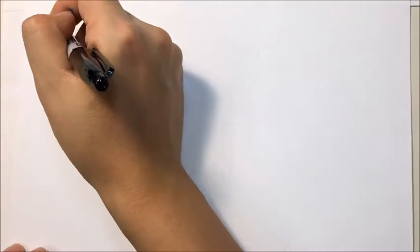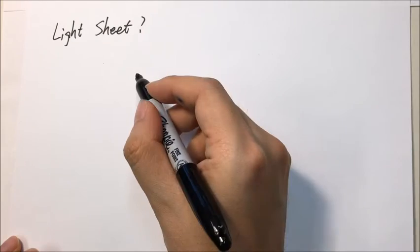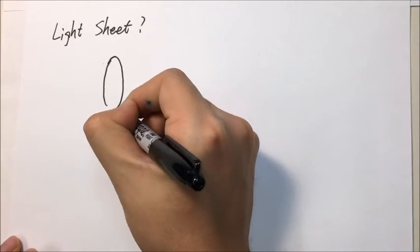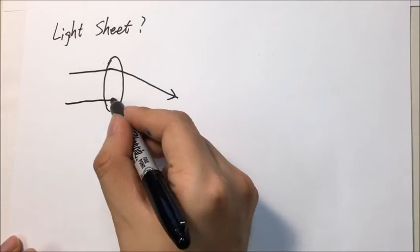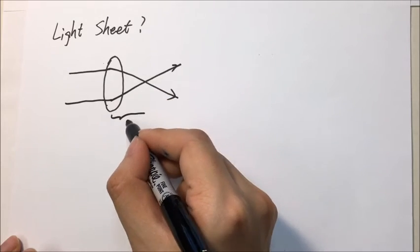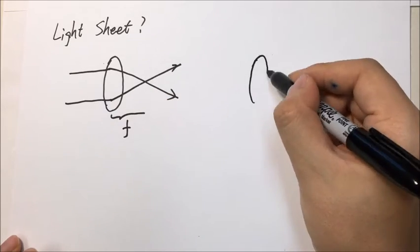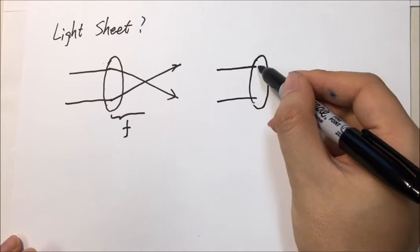What is light sheet? First, let's consider the simplest example: lens focus. A parallel light hits a lens. Ideally, it will focus on the focal point and defocus again. In fact, this is like a Gaussian beam.